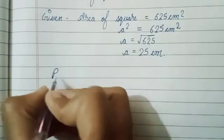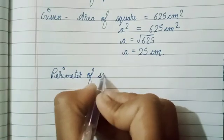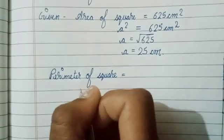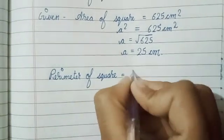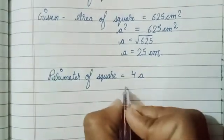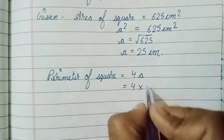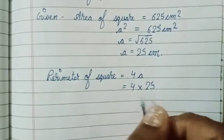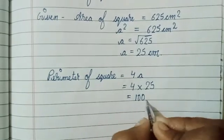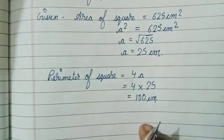Now with the formula of the perimeter of a square, which is 4a, meaning 4 times the side, we calculate 4 into 25, and we get 100. So 100 centimeters is the perimeter of the square.